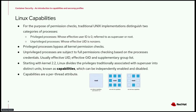Starting with kernel 2.2, Linux divides the privileges traditionally associated with the super user into distinct units known as capabilities, which can be independently enabled and disabled. Those capabilities are per-thread attributes, meaning that every thread will have its own capabilities assigned.